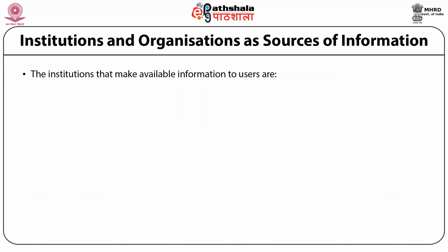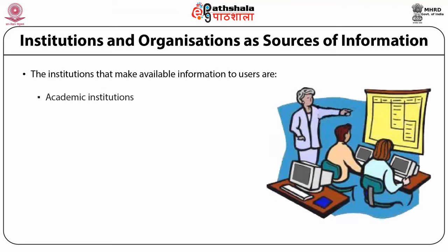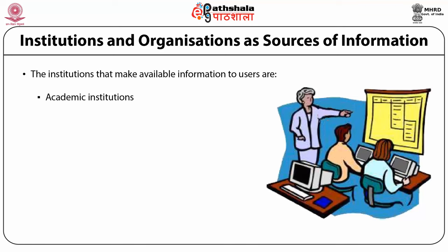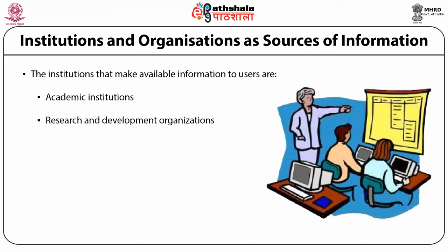Institutions and organizations that make available information to users are of several categories, and information made available by institutions or organizations is always authentic. The first category is academic institutions — these are universities, colleges, IITs, medical, law, pharmacy, and management schools, secondary schools, senior secondary schools, etc. The second category is research and development organizations, whose key activity is generating information through research work, published in the form of research papers, short communications, reports, and monographs.